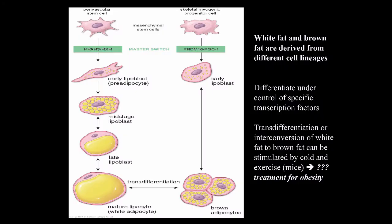White fat, also called unilocular fat, can be contrasted with multilocular or brown fat. Note that immature white fat has the appearance of multilocular brown fat. True brown fat has specialized enzymes called thermogenins that uncouple oxidative phosphorylation from ATP production, allowing fat cells to generate heat. Adipocytes can increase in cell number or size, showing either hypertrophy or hyperplasia. White fat and brown fat cells are thought to be derived from different cell lineages — white fat from a perivascular stem cell under the influence of certain transcription factors, and brown fat stem cells related to skeletal muscle myogenic progenitor cells.